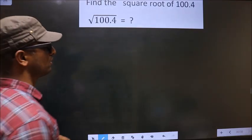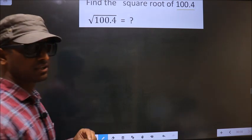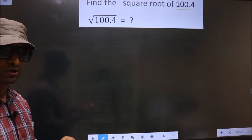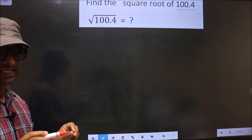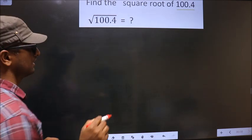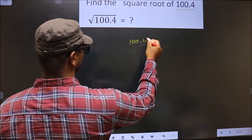Find the square root of 100.4. To find the square root by long division method, first we should frame it in this way. See, that is 100.4.